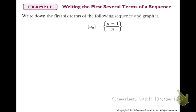If we find a sub 1, we put in a 1 for our n's. 1 minus 1 is 0, and 0 divided by 1 is 0. A sub 2: 2 minus 1 over 2. A sub 3: that would be 3 minus 1 over 3, or 2 thirds.